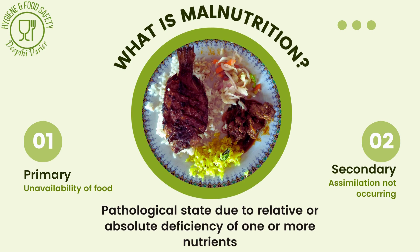Malnutrition is basically an imbalance. It happens due to deficiency, but it can also be due to too much of a particular nutrient. It occurs when there is non-optimal eating of food — whether in terms of the quantity or the quality of food being eaten — which is causing the imbalance.